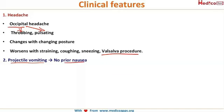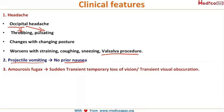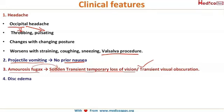The second clinical feature is projectile vomiting — meaning there is no prior nausea. The third feature is amaurosis fugax, which is a sudden, transient, temporary loss of vision — also called transient obscuration of vision. The patient suddenly cannot see anything, everything goes dark, and then vision is regained just as suddenly. On examination, disc edema is present.